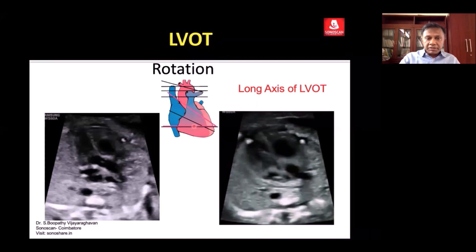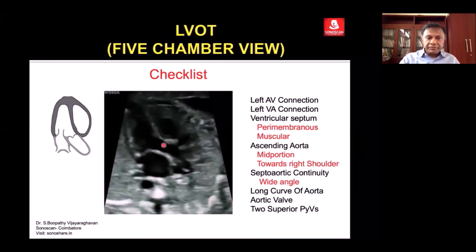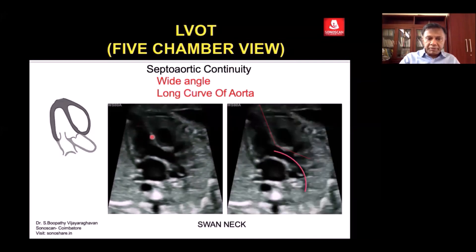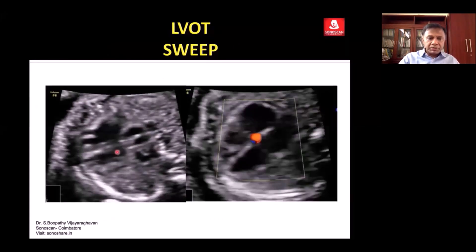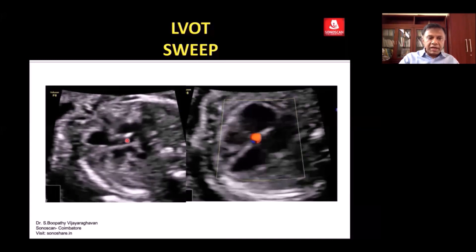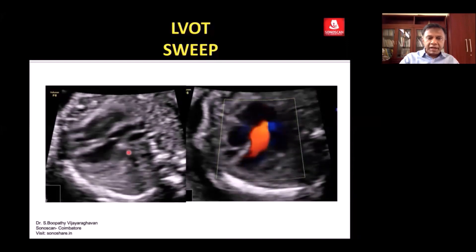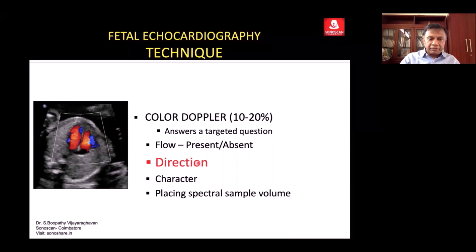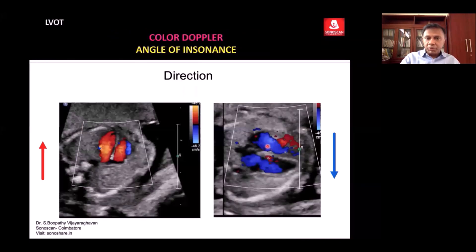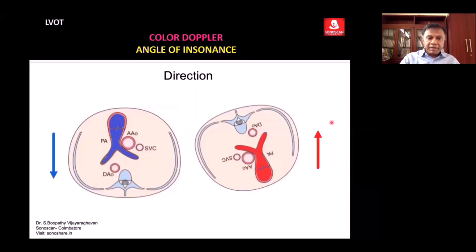In the axial sweep, instead of tilting the transducer towards the head you rotate it, covering the atrioventricular connection and then the ventricular-arterial connection — that is the LV-aorta connection. You also see the ventricular septum and the ascending aorta formed by the septum and the anterior wall. In systole the aortic valve totally disappears; you should not see the aortic valve in systole. The direction of flow is important: blue across the AV valves. When you make a sweep you see the flow across the AV valves in the direction of flow.